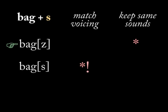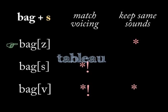Other candidates might do even worse, like if we added bagv. This little evaluation table here gets called a tableau in optimality theory.